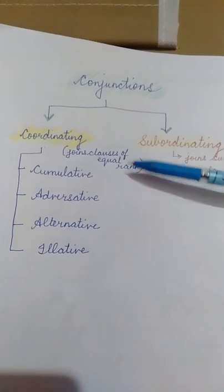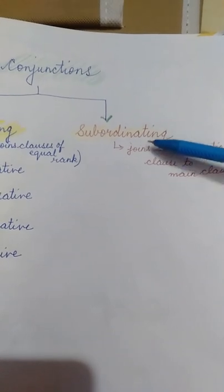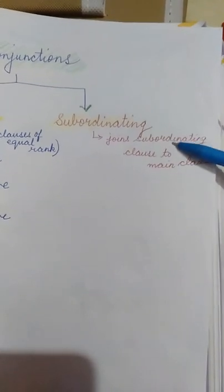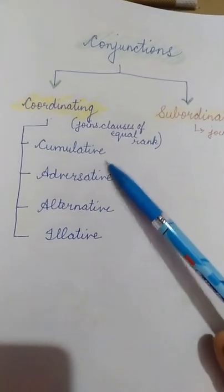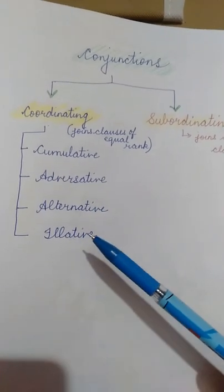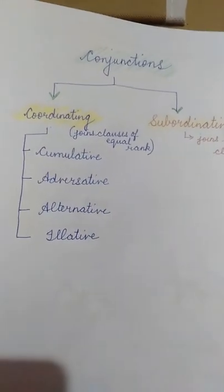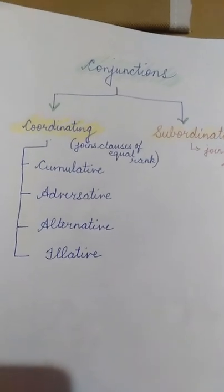Subordinating conjunctions, as the word indicates, join a subordinating clause to the main clause, which requires the main clause to complete its meaning. Further, we are going to learn about the different coordinating conjunctions: cumulative, adversative, alternative, and illative. We will learn through the various examples given in your book, so let's start from the book.